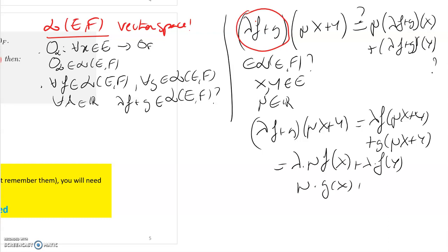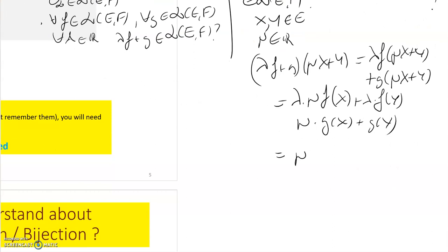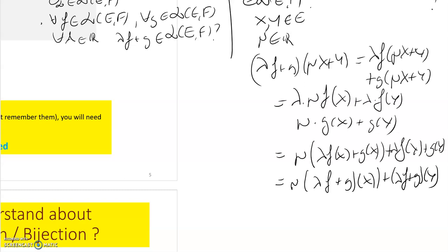And so this is really something that I can rewrite as mu times lambda F of X plus G of X plus lambda times F of Y plus G of Y. And so this is really something that I can rewrite as mu times lambda F plus G applied to X plus lambda F plus G applied to Y.